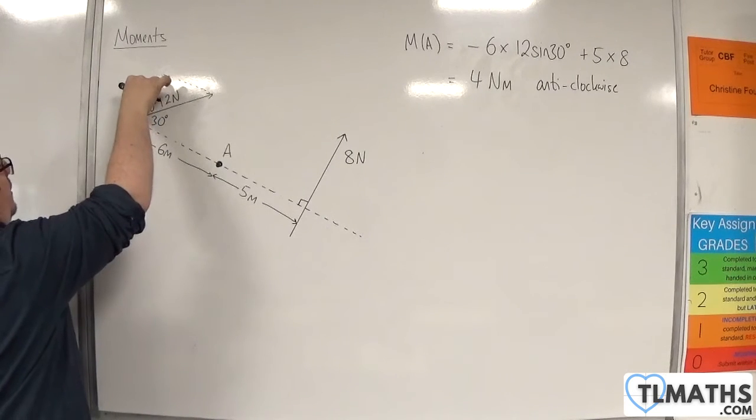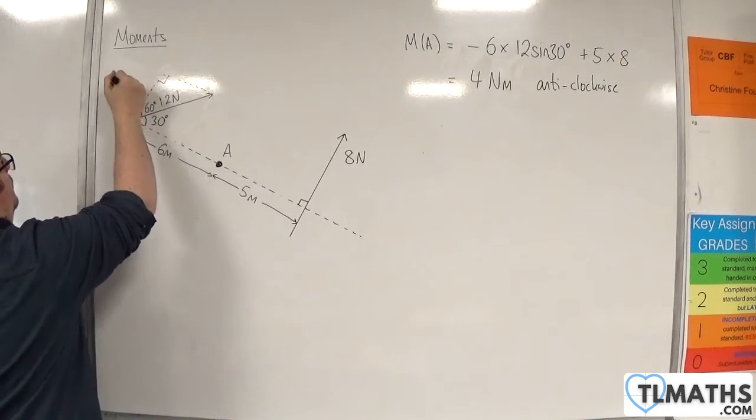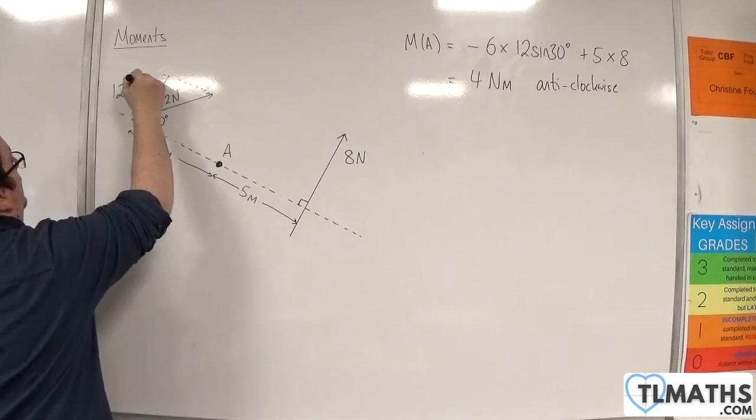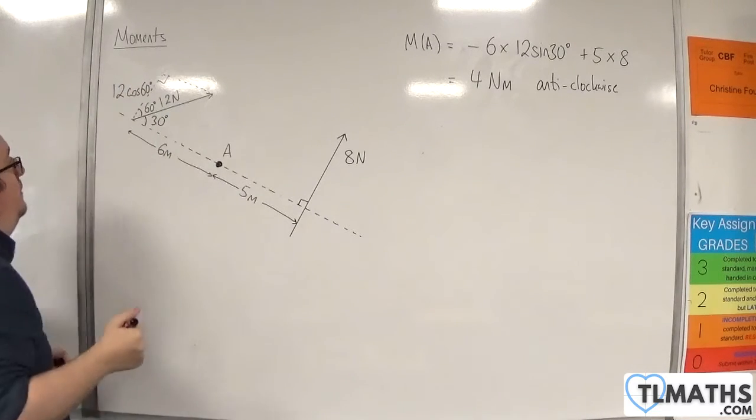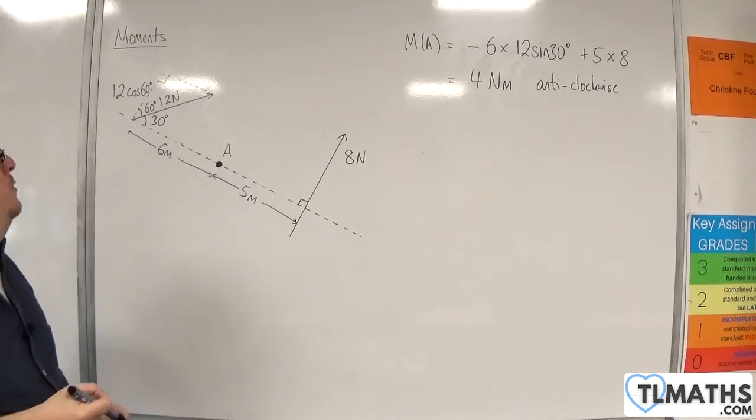And so this side is going to be 12 cosine 60 degrees. And this is 12 sine 60 degrees.